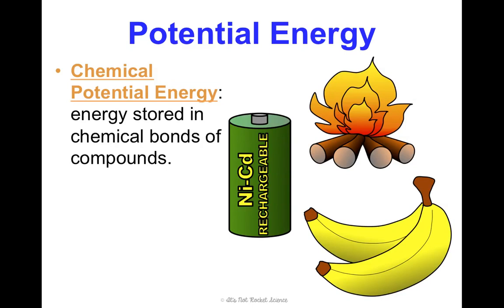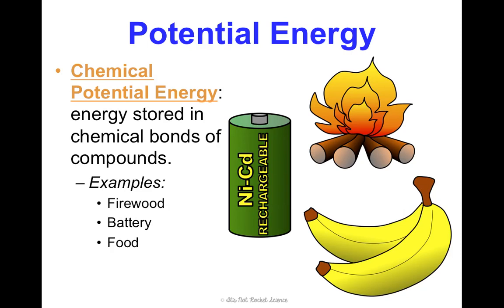Chemical potential energy is energy stored in the chemical bonds of compounds. We'll talk about this more in later units when we get to bonding and chemical reactions, and really hit it in biology. Firewood, when it burns, is releasing chemical potential energy. Batteries have chemical energy in them. Any food you eat — anything made of chemical compounds — has chemical potential energy in it.